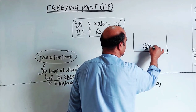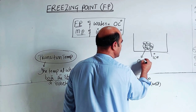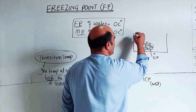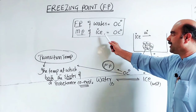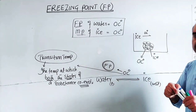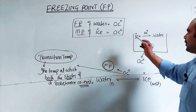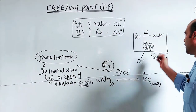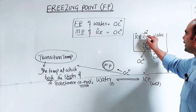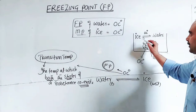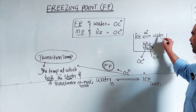Ice is the solid state of water at zero degrees C. At zero degrees C, ice melts to form water — so this is the melting point of ice. At zero degrees C, water freezes to form ice — so this is the freezing point of water. Both conversions occur at zero degrees C, where the two states coexist.